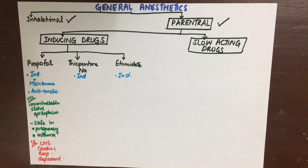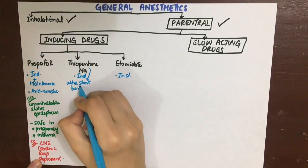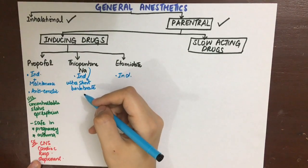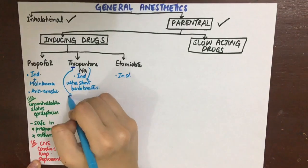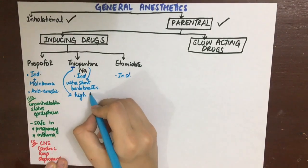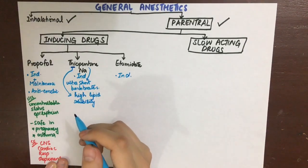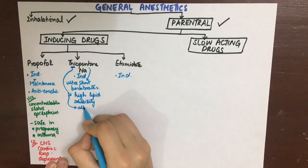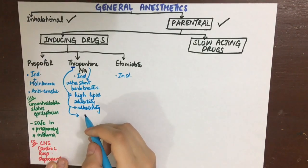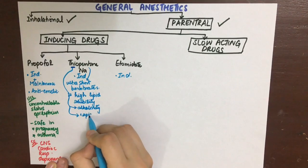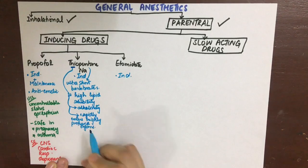Thiopentone sodium is an ultra-short-acting barbiturate. As it has 'HI' in it — thiopentone sodium — we remember that it has high lipid solubility, high alkalinity, and is highly irritant. It rapidly enters highly perfused organs such as the brain, liver, and heart, but then also has rapid redistribution.